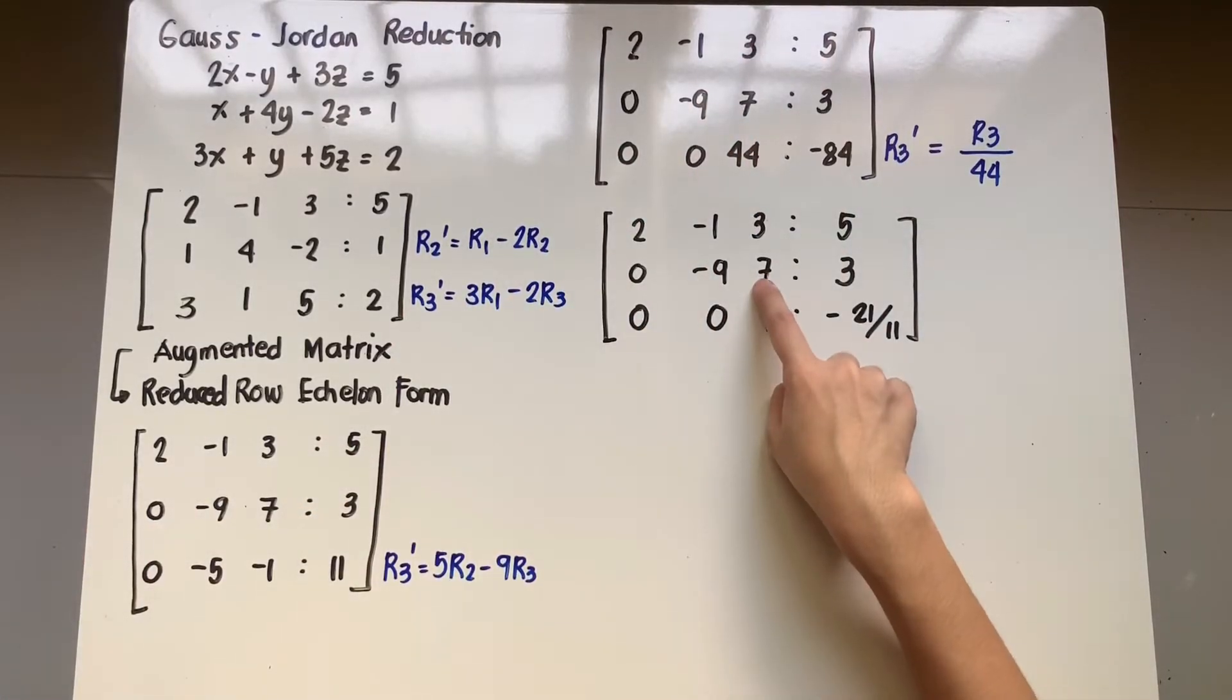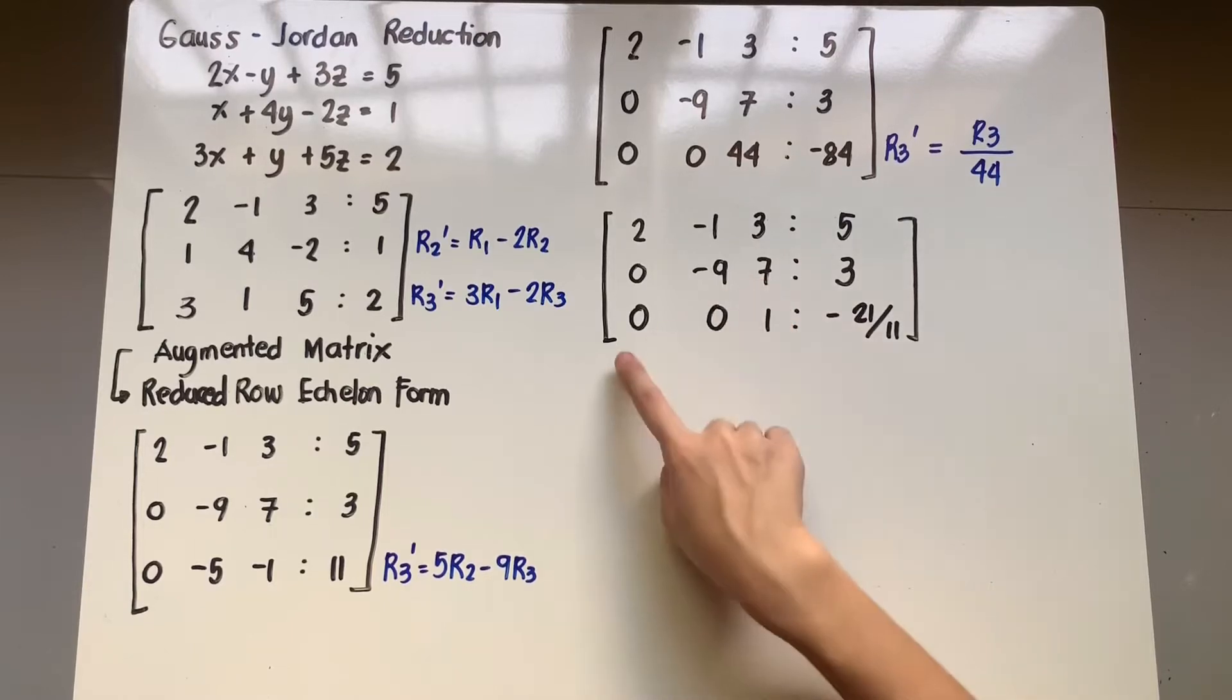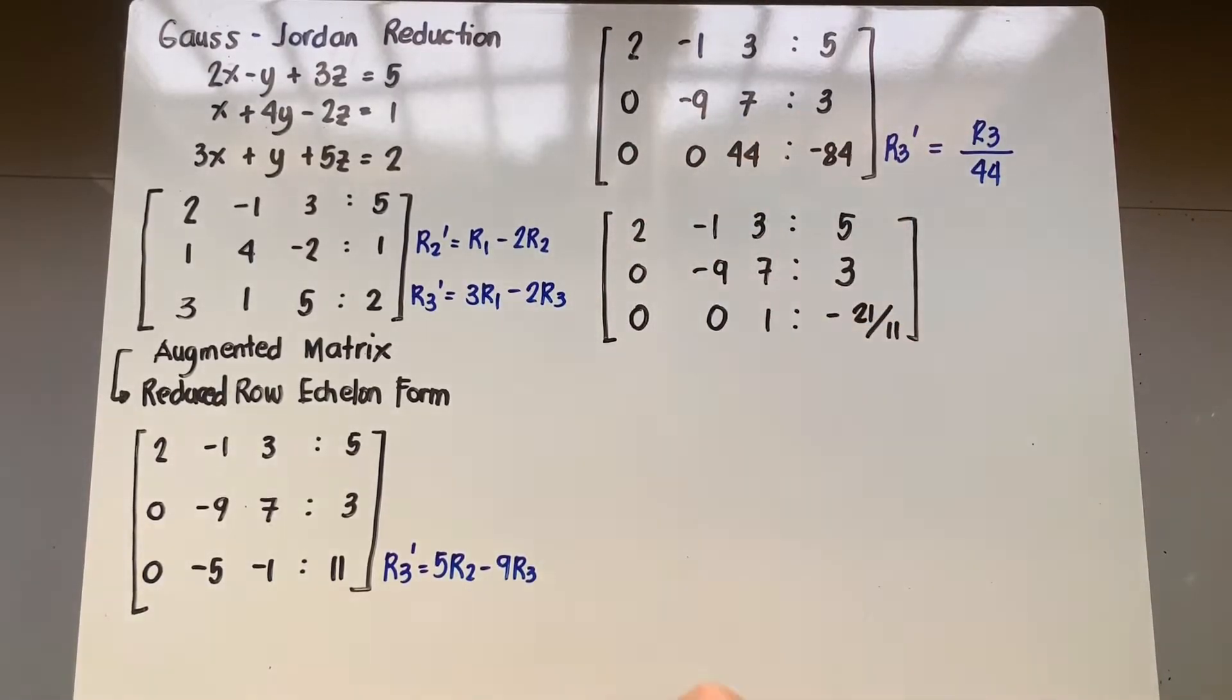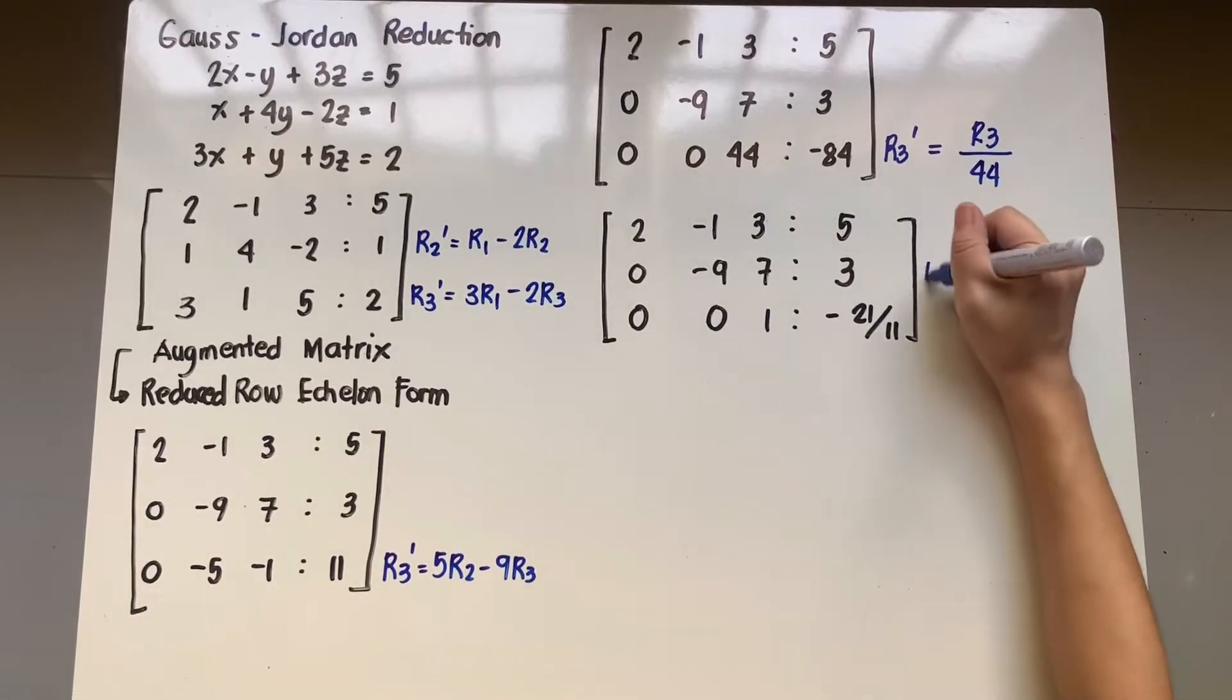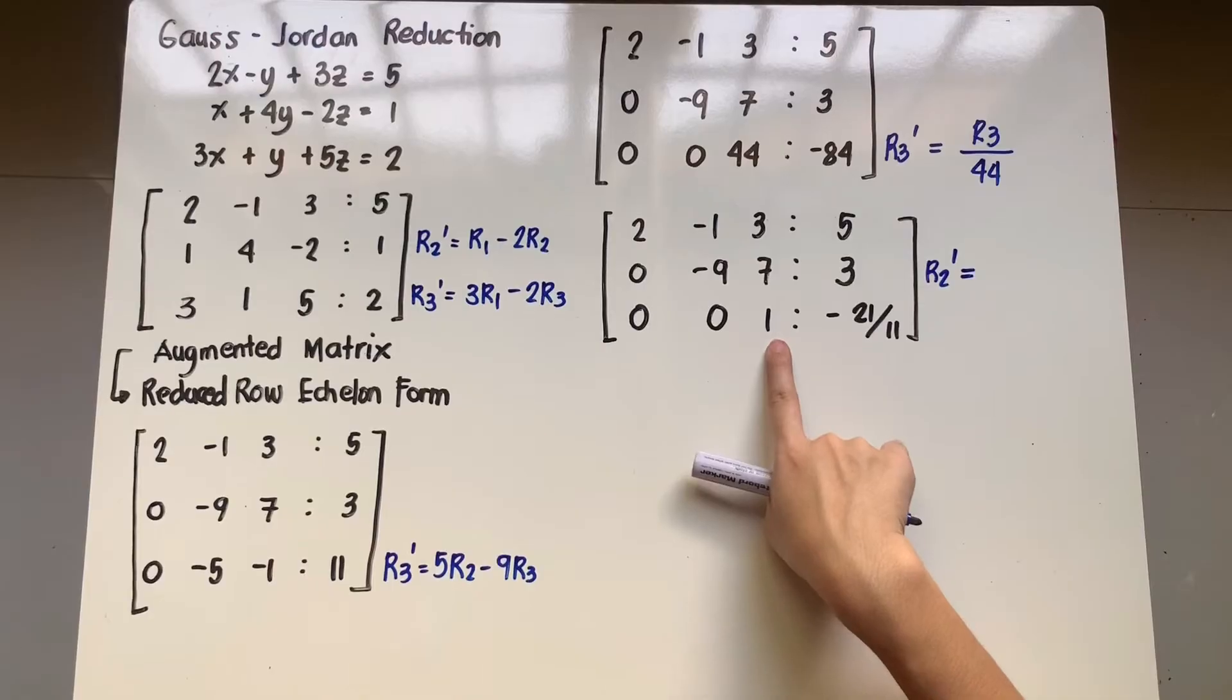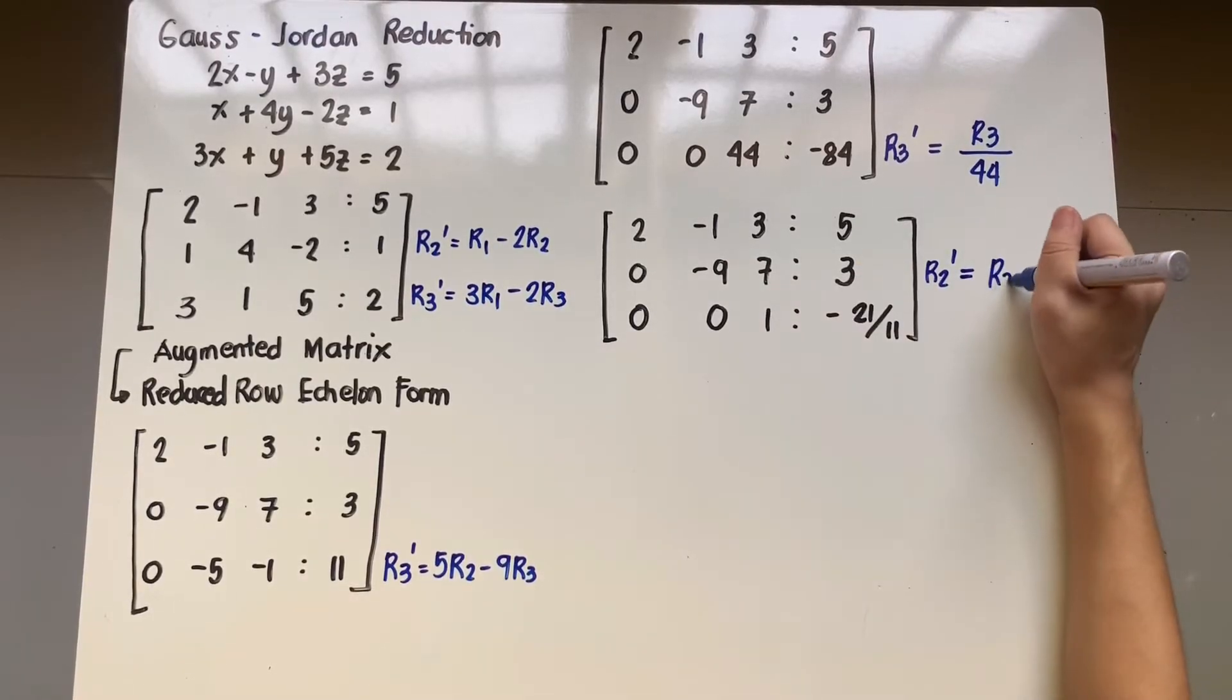If I'm going to make the 0, the best reference row would be the third row. Since simple na yung mga values dito, 0, 0, 1 na lang siya instead of using the first row pa, diba? Dito ko ngayon ibabase. If I'm going to change my second row, the formula I'll base sa third row.